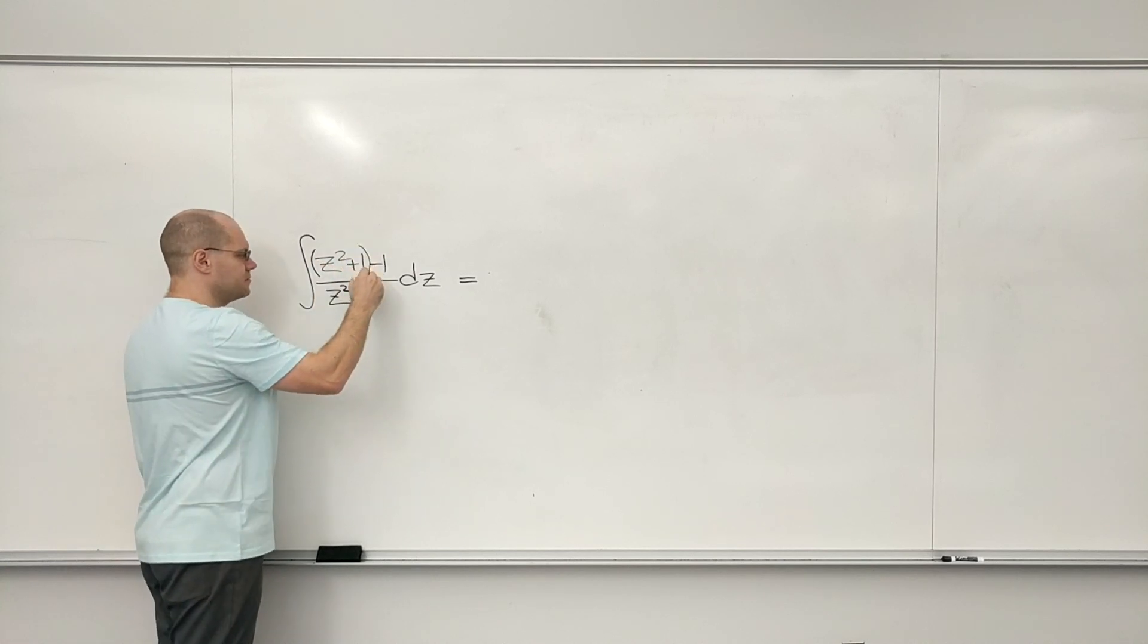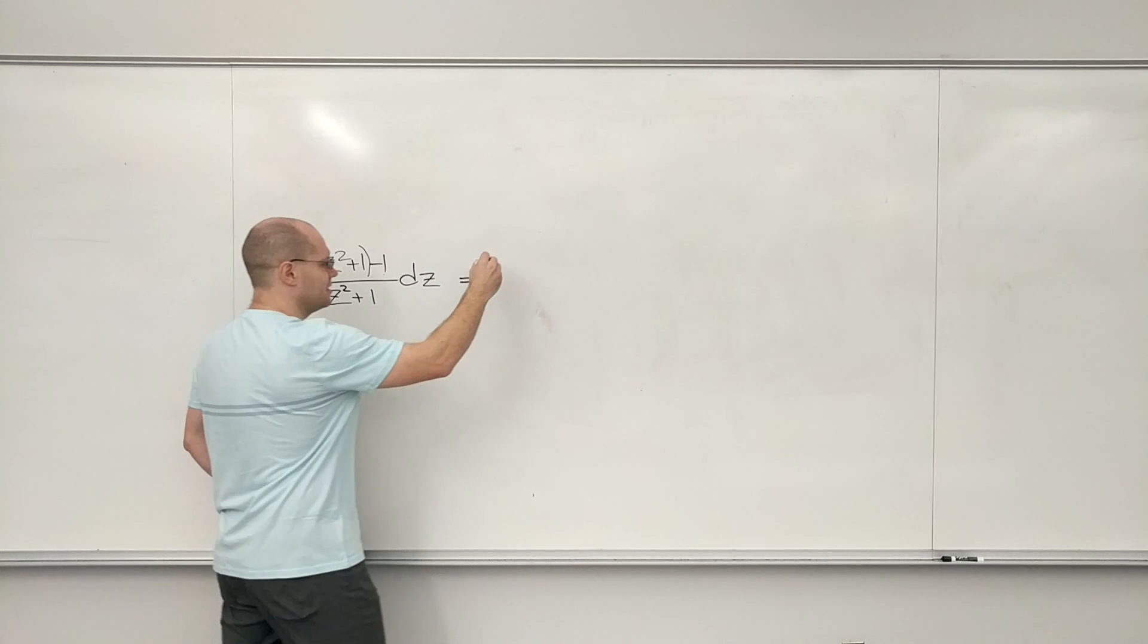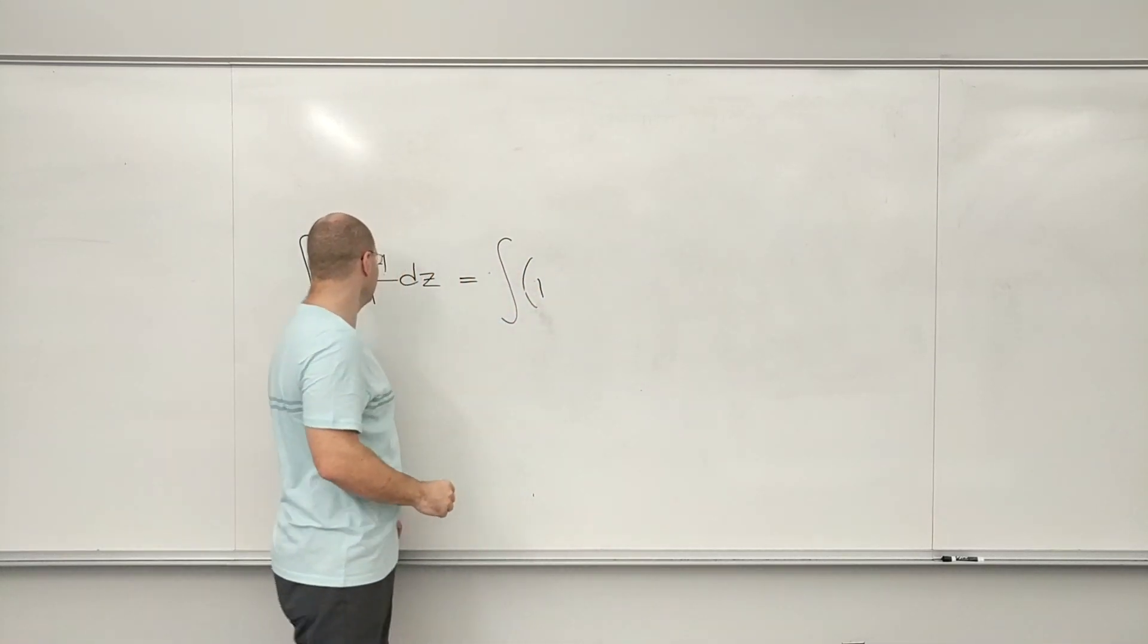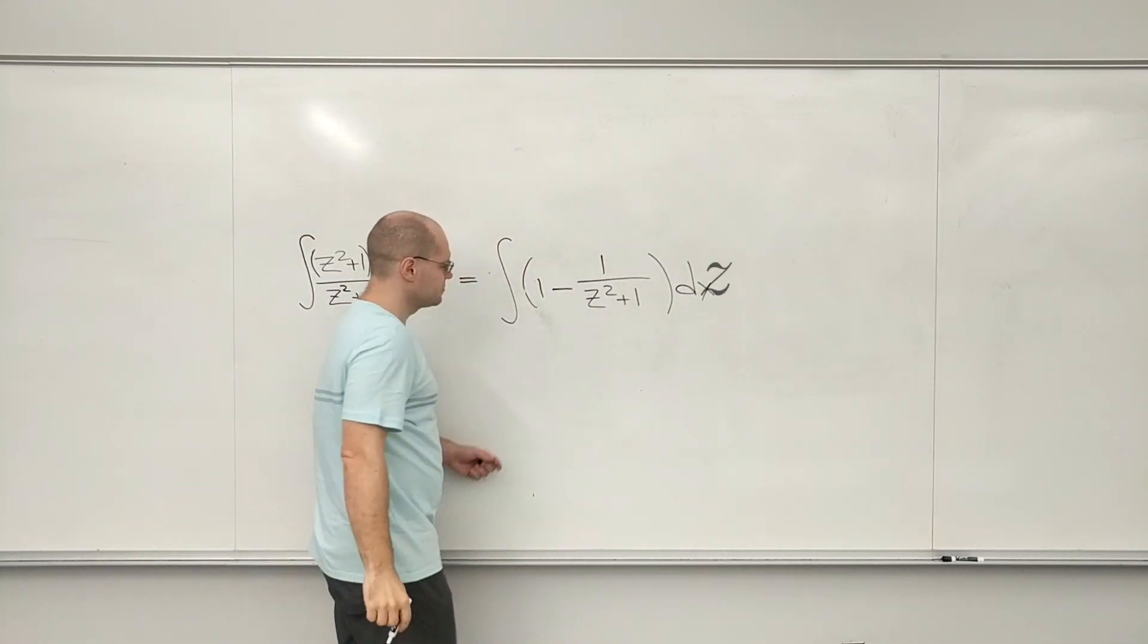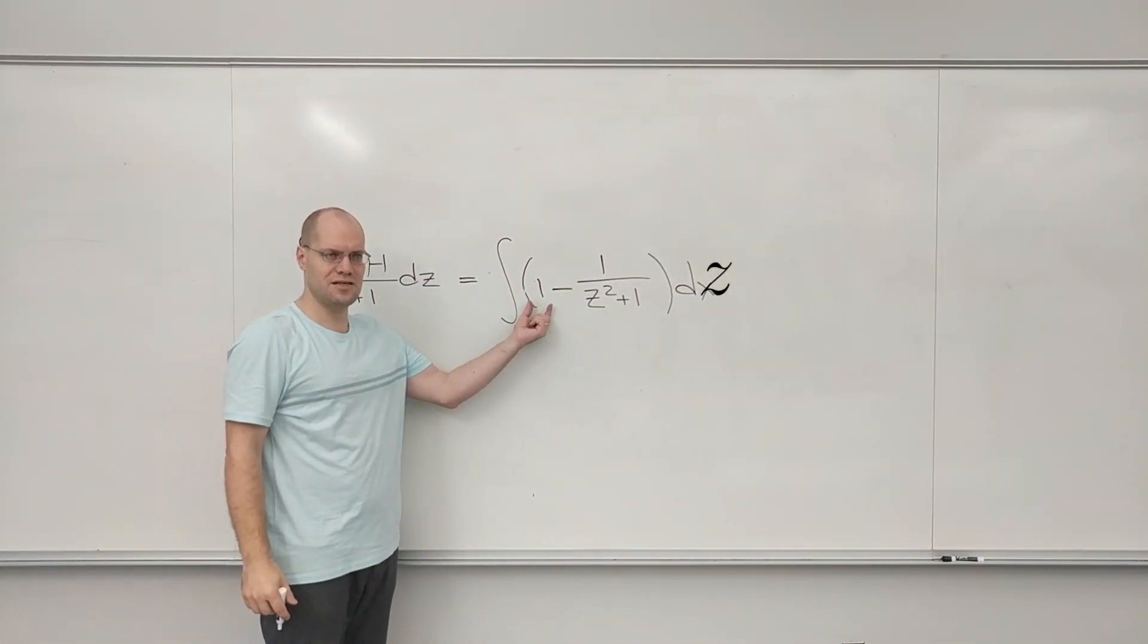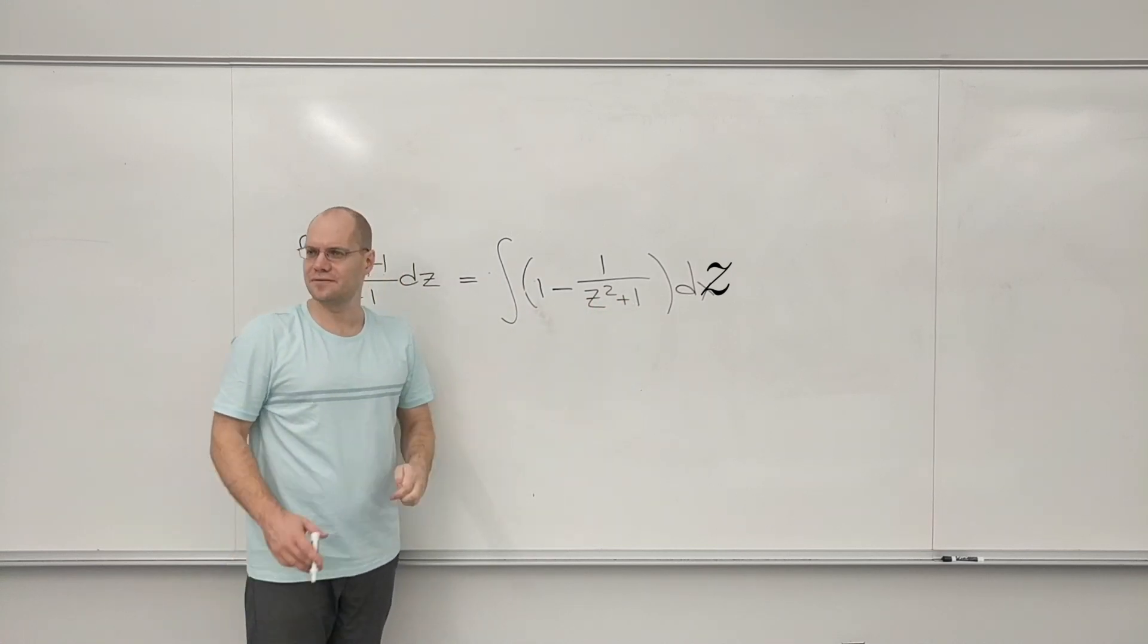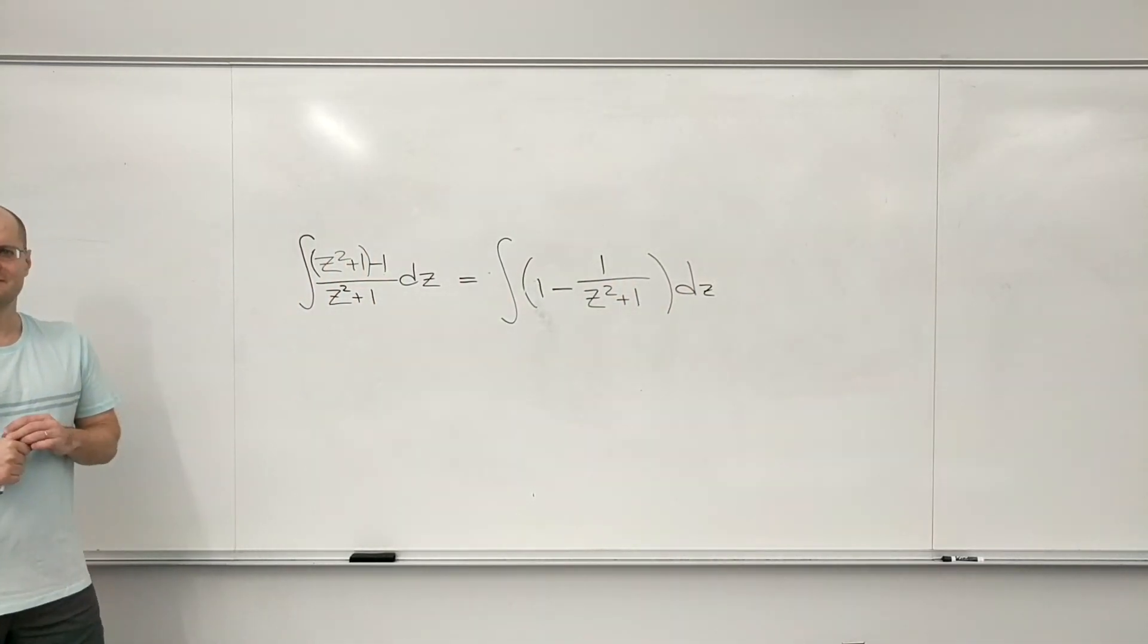Except now you can group it this way, and when it's this divided by this, it's integral of one minus, and so this gives you z, and this is arctangent, even though it's written in a slightly unfamiliar way. Okay?